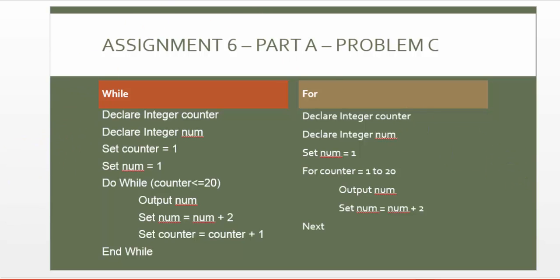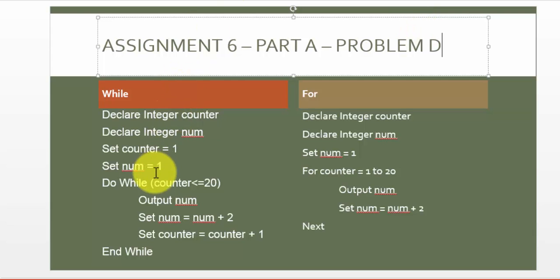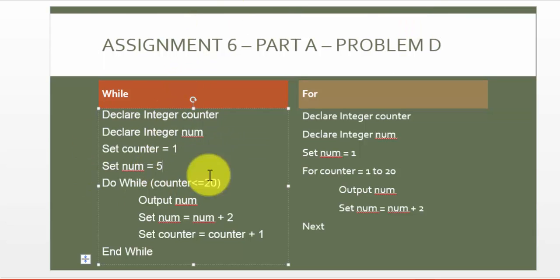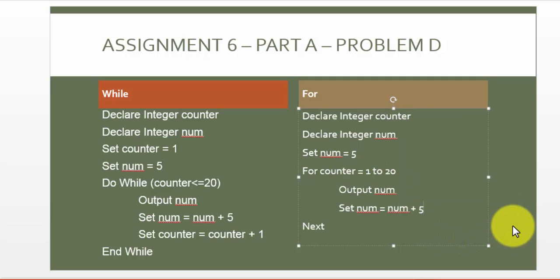Now let's look at Part D, which is to display the first 20 multiples of 5. There are two sets of approaches. In the first, we start number from 5 and every time the loop runs, we increment by 5. So we start with 5 in the for loop and increment by 5 each iteration. That's one approach and it works great.